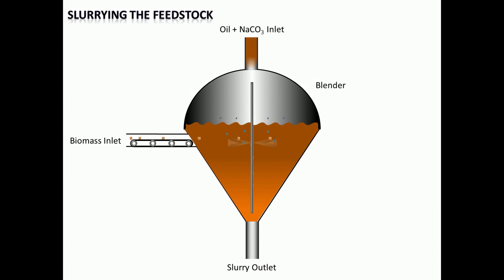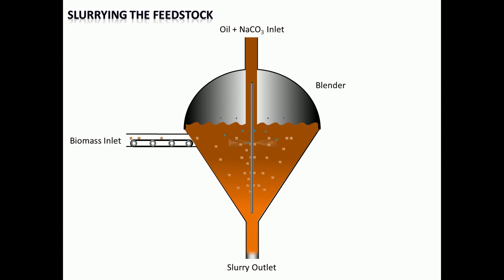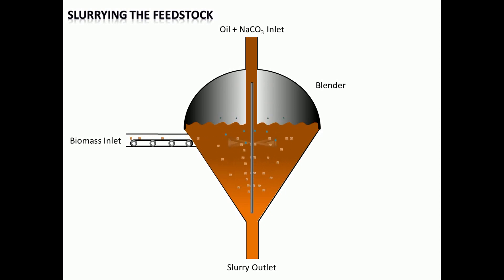In the blender, the dried and ground wood or other biomass is mixed with oil to form a slurry with up to 30% solid contents. For initial setup, anthracene oil is used. After the plant is in operation, oil produced in the process is recycled for slurry preparation.